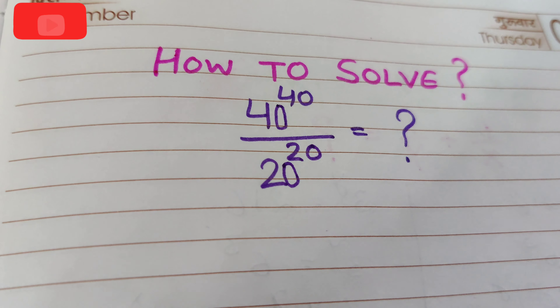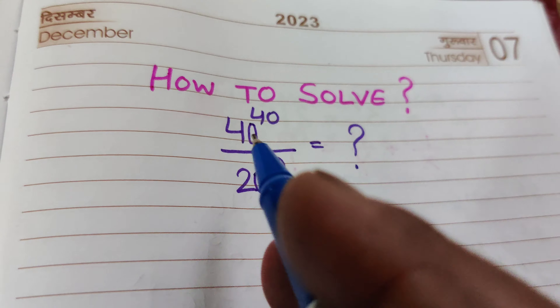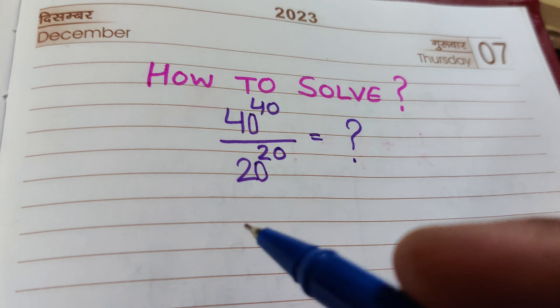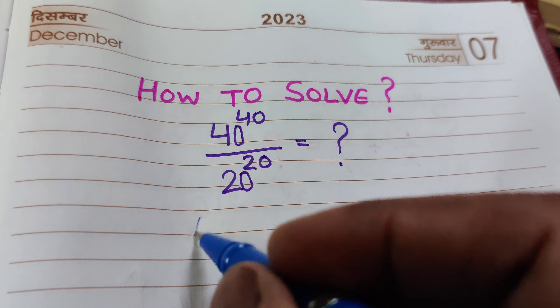How to solve 40 raised to the power of 40 by 20 raised to the power of 20? What will be the simplest answer of this question? This question is related to the exponents.